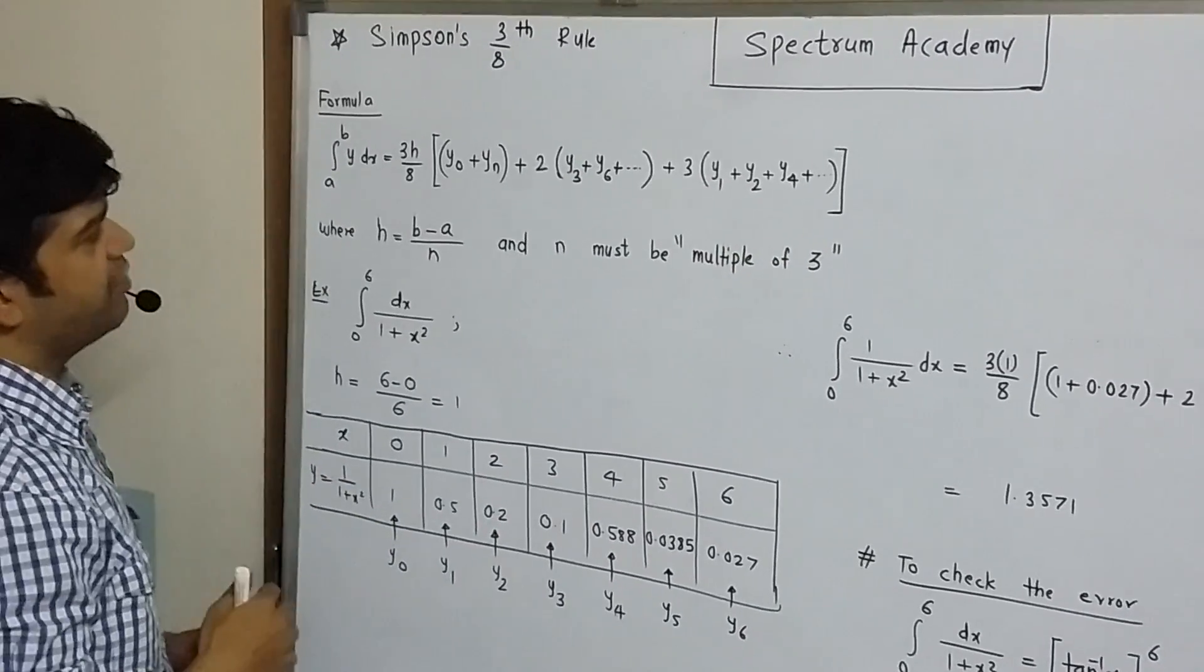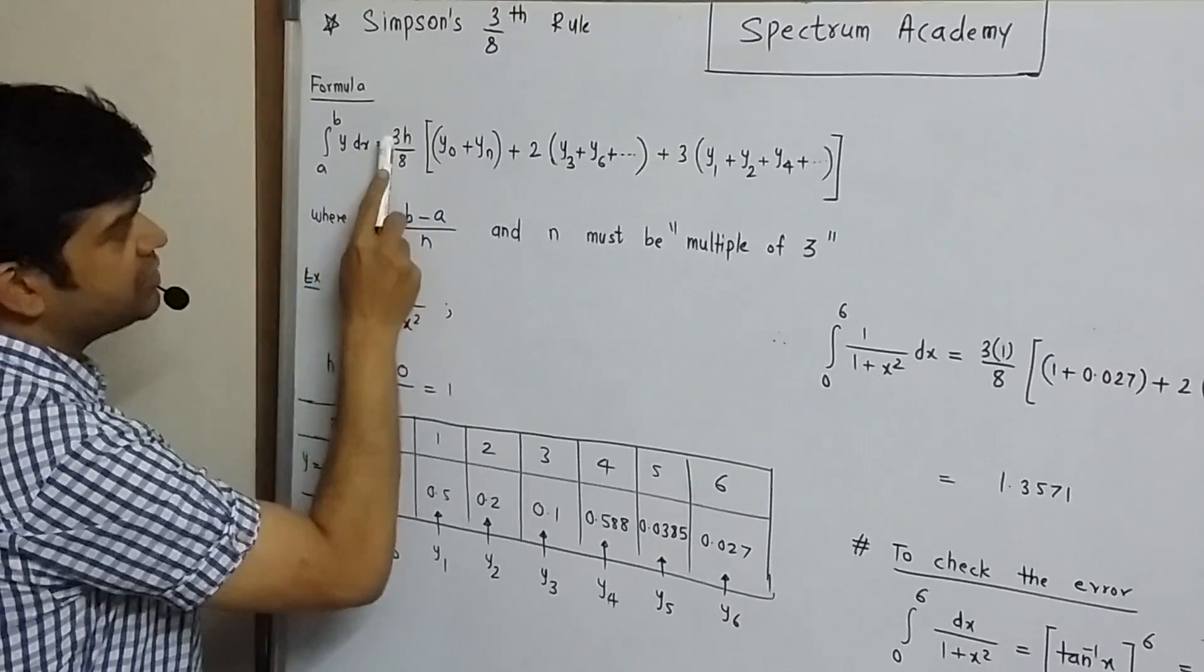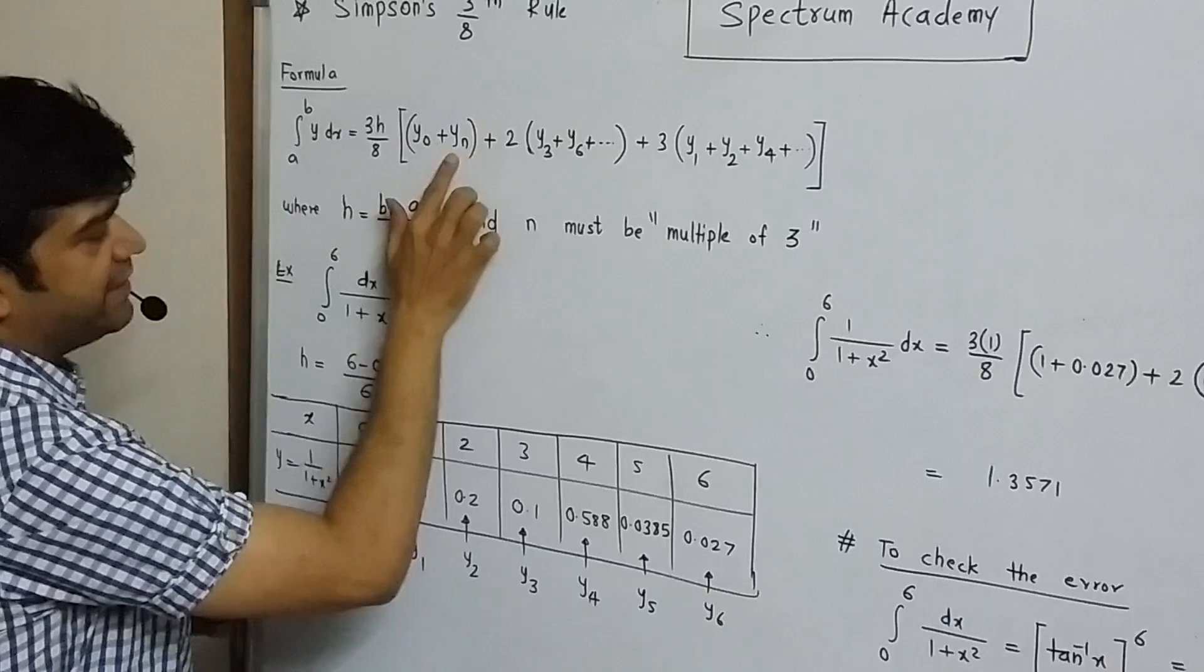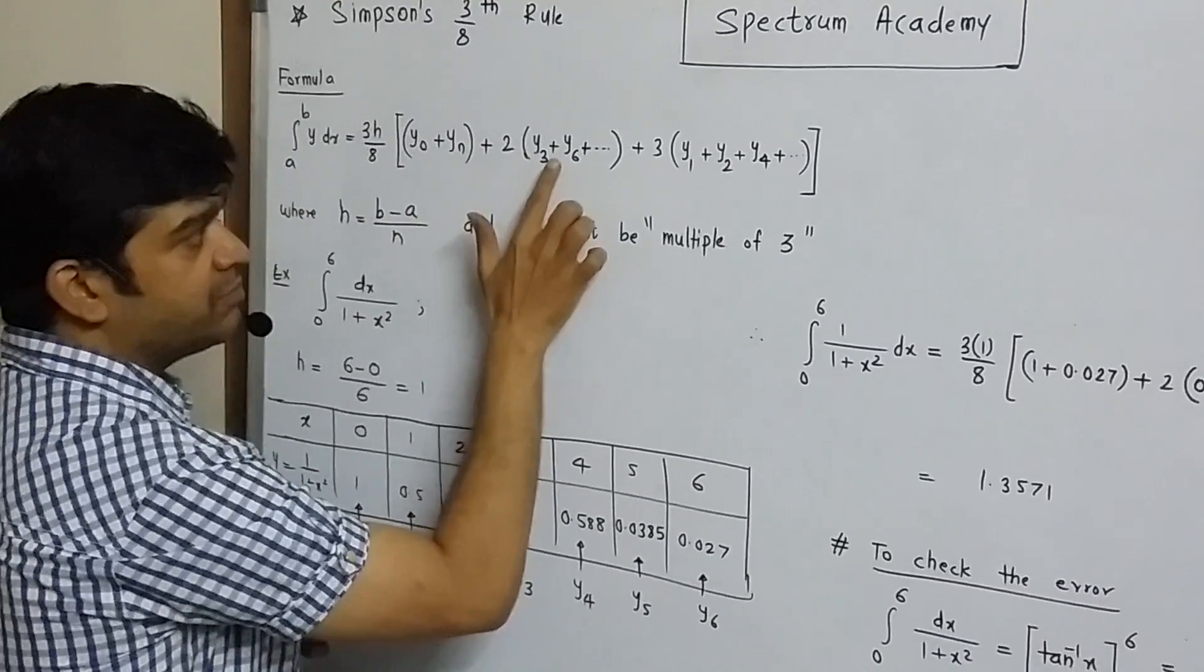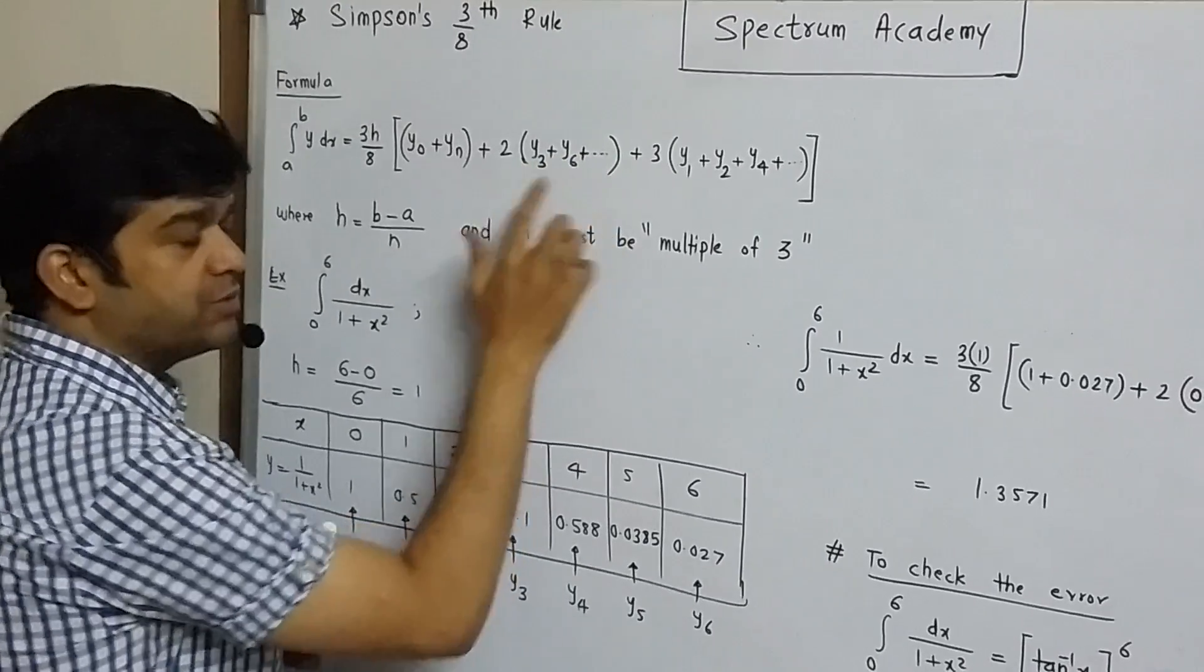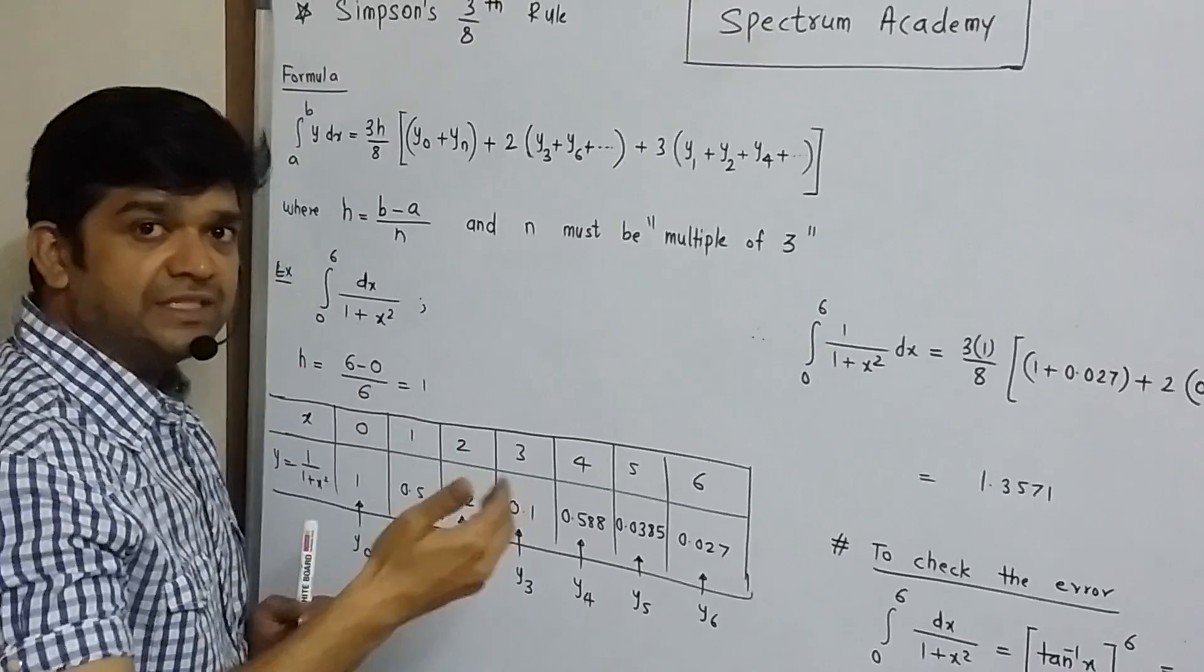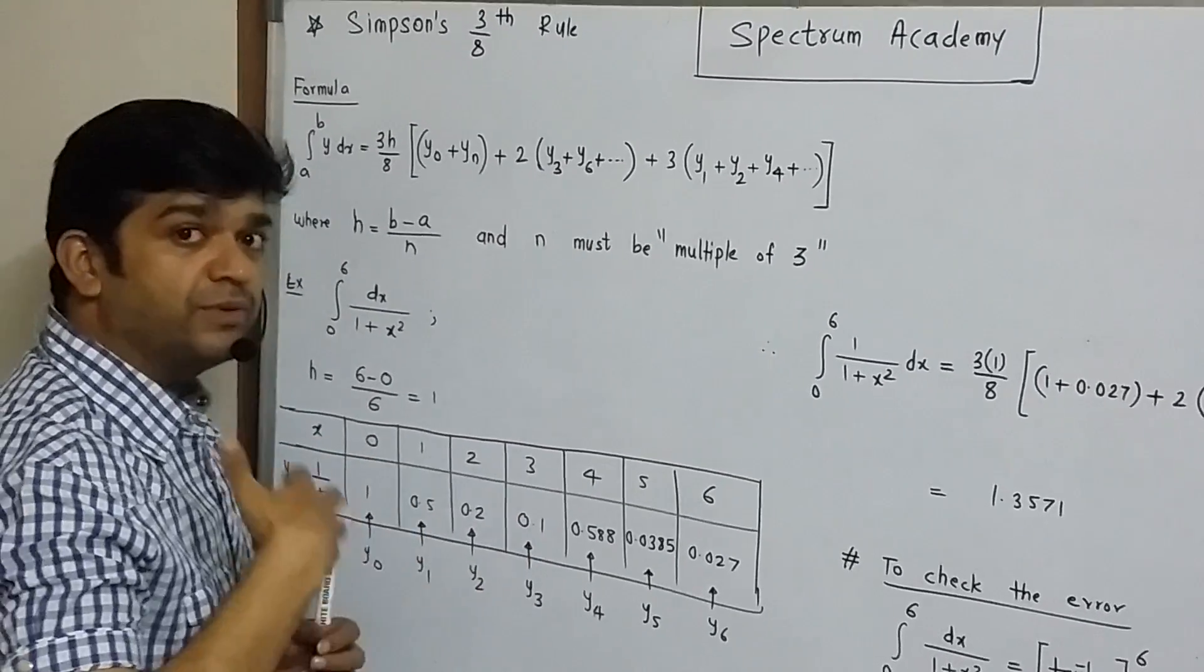Let's understand what this formula is saying. Integral a to b y dx, it is equal to 3h upon 8, y0 plus yn, these are extreme ordinates, plus 2 times y3 plus y6 plus y9. Here we are going to write only those ordinates which are multiple of 3.